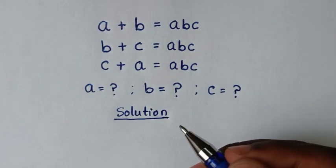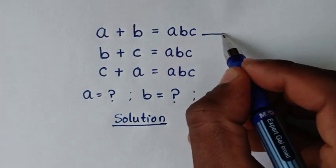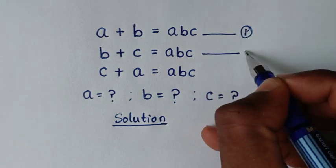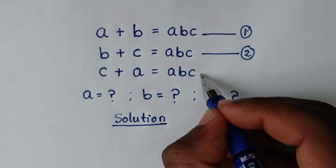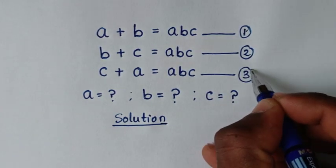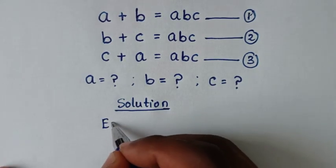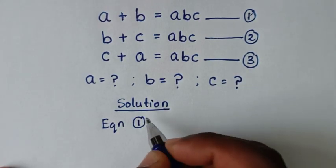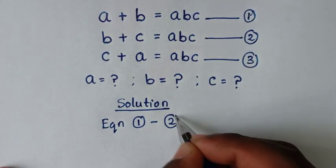In the first step, we'll let this as equation 1, and this as equation 2, and this as equation 3.